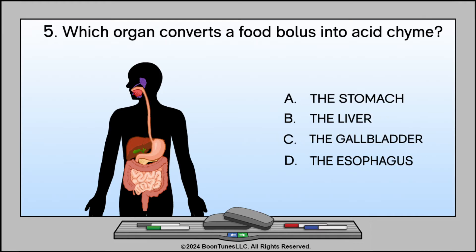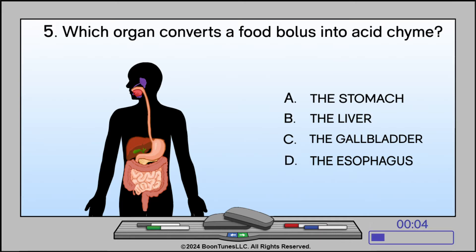Which organ converts a food bolus into acid chyme? A. The stomach. B. The liver. C. The gallbladder. D. The esophagus. The answer is A: The stomach.